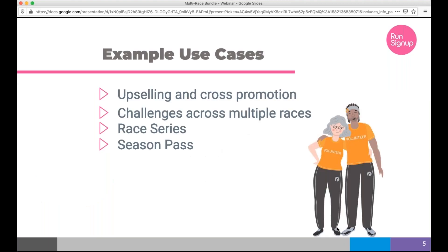Some example use cases: the upsell approach can involve two races you own, or you can cross-promote with another race in the area — for instance, a 'run the city challenge' where participants run races in different parts of the city. A race series is another popular example where a single registration automatically enters participants in every race in the series. There's also a hybrid example, like a season pass, where someone can choose a minimum or maximum number of events in a single transaction.